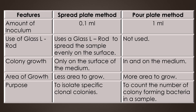Colony growth in the spread plate method is observed only on the surface of the medium, but in the pour plate method the colony growth is observed both in and on the medium. Regarding the area of growth, microbial growth is observed in a smaller area in the spread plate method, but in the pour plate method microbial growth is observed in a larger area.